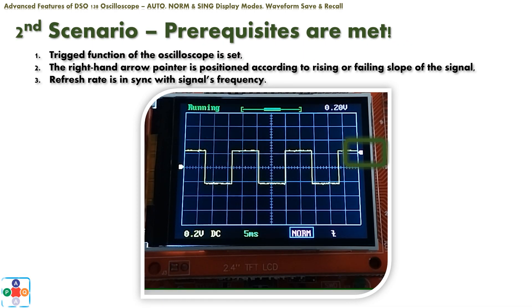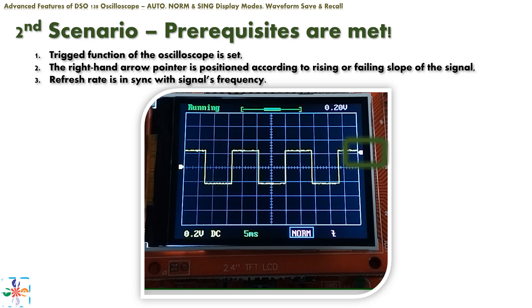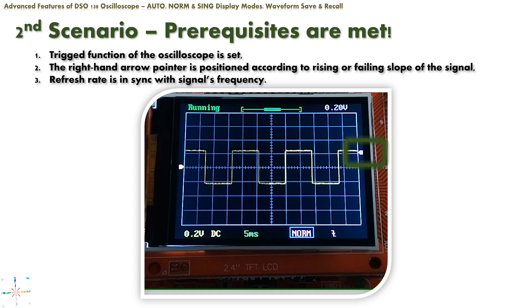In the second scenario, where all of the trig functionalities have been set properly and the signal is centered on display both horizontally and vertically, normal display mode comes to full fruition. In normal display mode, the display of the signal is refreshed every time the oscilloscope receives a triggering event. For example, if you have an input signal with 5 Hz frequency, this means the signal display will be refreshed five times per second. Consequently, signals with higher frequency will cause a higher refresh rate of signal display. Have in mind that the maximum refresh rate is dependent on the technical specifications of the LCD display itself, and also that the human eye cannot distinguish very high display refresh rates.